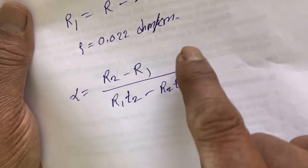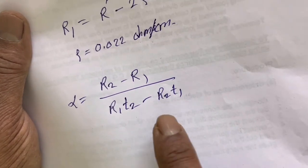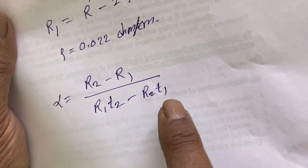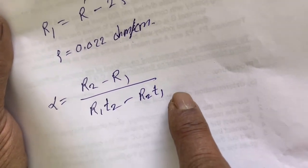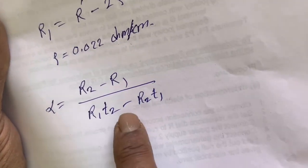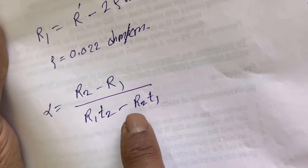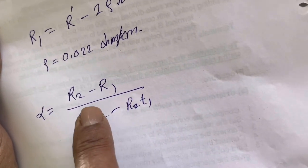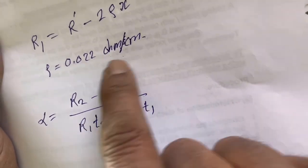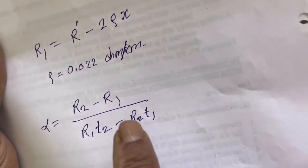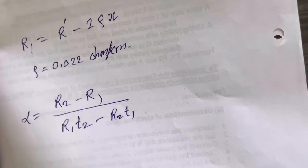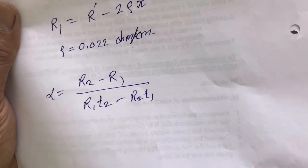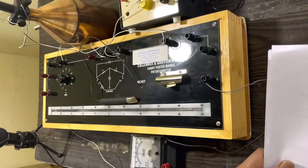By getting the balancing length X, R2 can be obtained by the same formula. And getting R1, R2, temperature T1 at room temperature, and T2 at 100 degrees centigrade, and substituting all the values, the alpha — temperature coefficient of resistance — can be obtained.